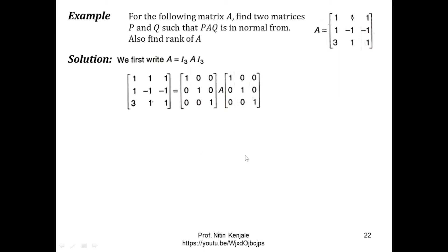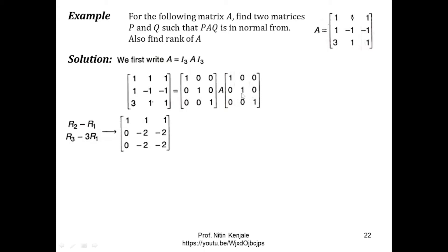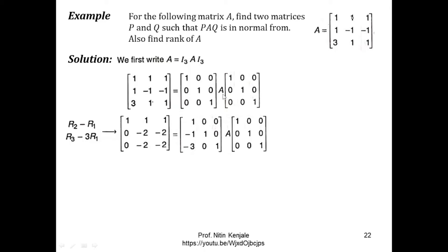We want to reduce this matrix to normal form, so we first perform transformations R2 minus R1 and R3 minus 3 times R1, which reduces the corresponding elements to zero. Since we performed row transformations, we perform these same row transformations on the first identity matrix, carrying the third matrix forward as-is. So R2 minus R1 gives minus 1, 1, and 0, and R3 minus 3R1 reduces the third row to minus 3, 0, and 1.